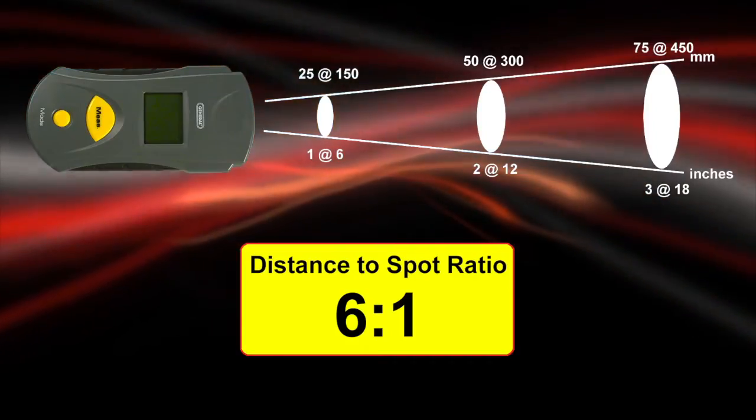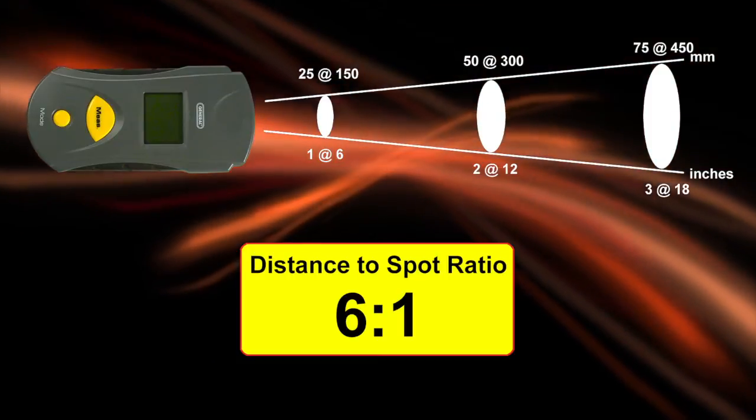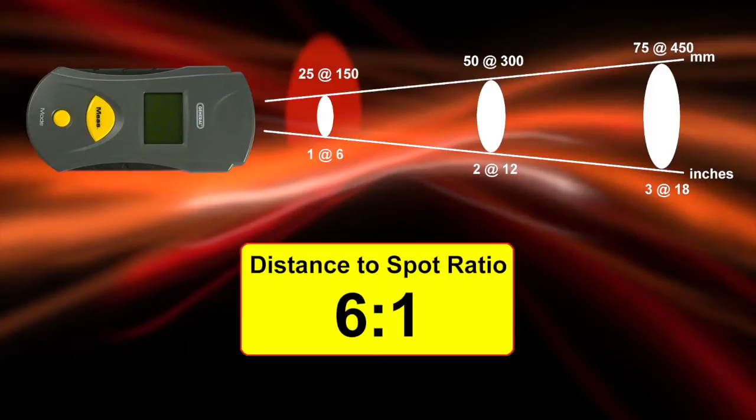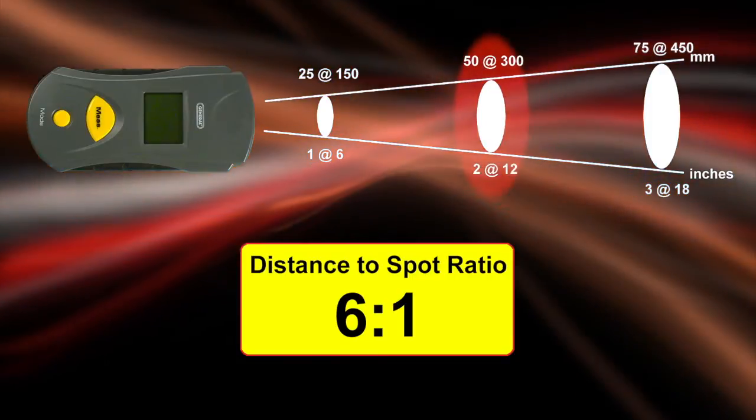The IRT-105 boasts a 6 to 1 distance to spot ratio with laser targeting. Measure a 1-inch target from 6 inches away, or a 2-inch target from 12 inches.